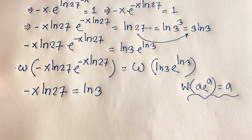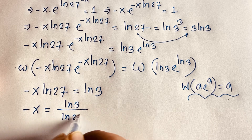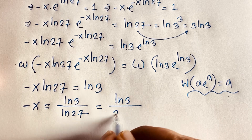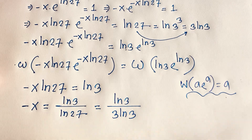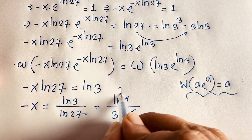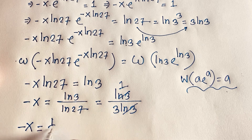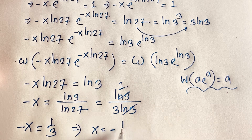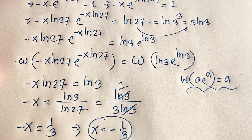Dividing both sides by ln 27, we get minus x equals ln 3 over ln 27. Since ln 27 equals 3 ln 3, the ln 3 terms cancel and we get 1 over 3. Therefore x equals minus 1 over 3. This is our final answer using the Lambert W function method.